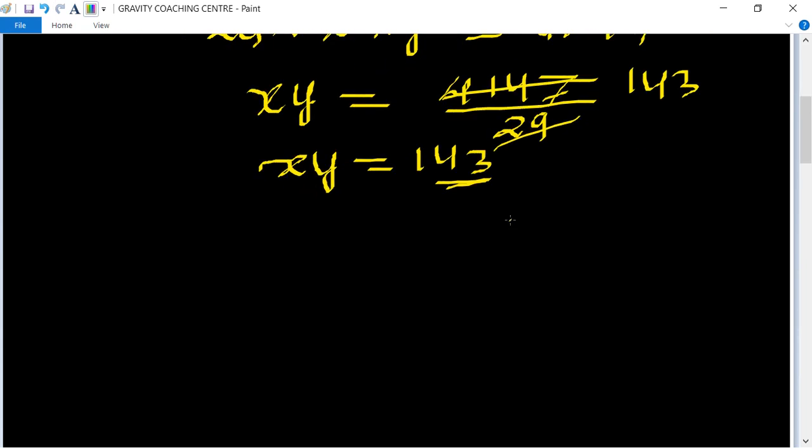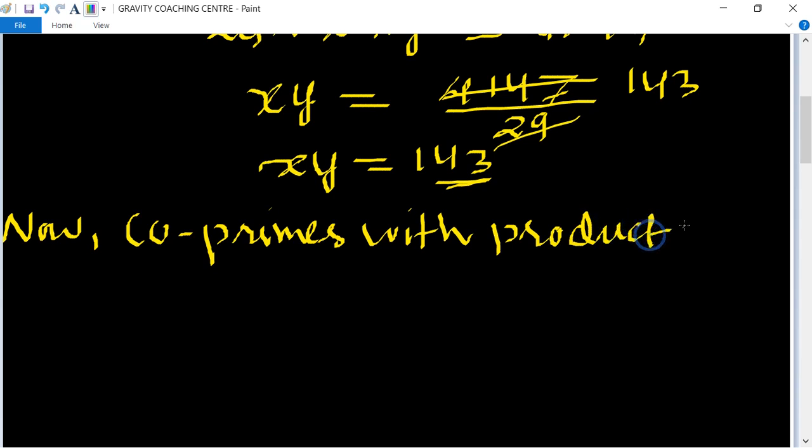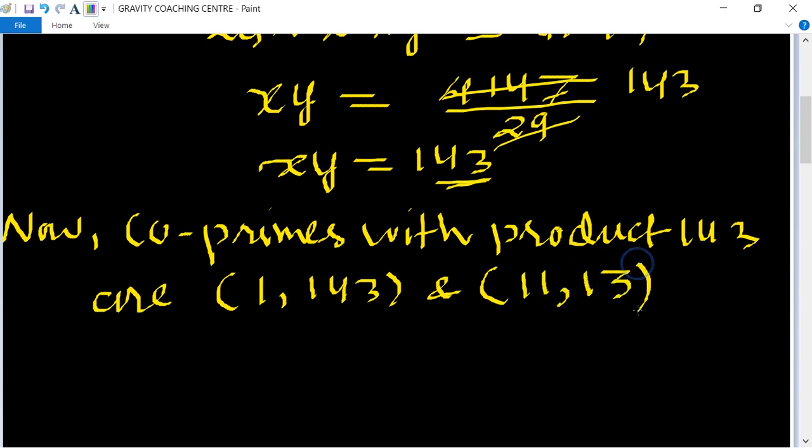Now coprimes of 143 are 1 comma 143 and 11 comma 13. So the possible pairs equal to: